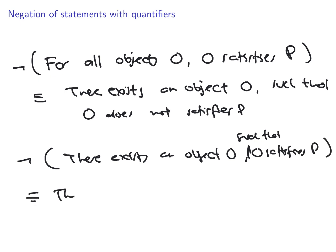And similarly, to negate existential statement, let's say there exists an object O such that O satisfies P, this is the same by saying that for all objects O, O satisfies not P.